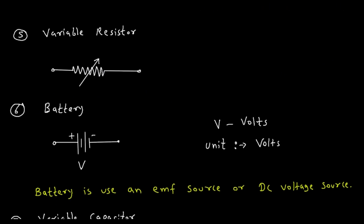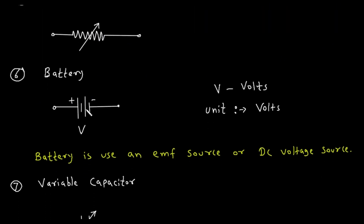Next is battery. This is the symbol for battery. It has two terminals — one is positive terminal and the second is negative terminal. This V represents the value of voltage. The unit of voltage is volts, which is represented by capital V. Battery is used as an EMF source or DC voltage source. EMF stands for electromotive force.